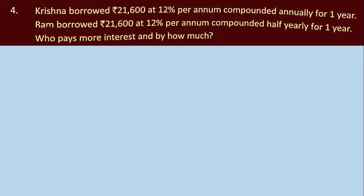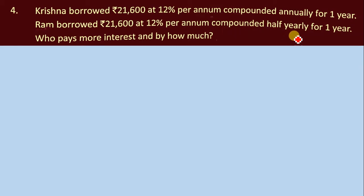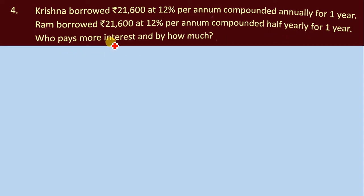Question number 4 says: Krishna borrowed 21,600 at 12% per annum compounded annually for one year, and Ram borrowed 21,600 at 12% per annum compounded half-yearly. For both persons the principal is the same, the rate is the same, and the time is the same, but Krishna's is compounded annually and Ram's is compounded half-yearly. The question is: who pays more interest and by how much?